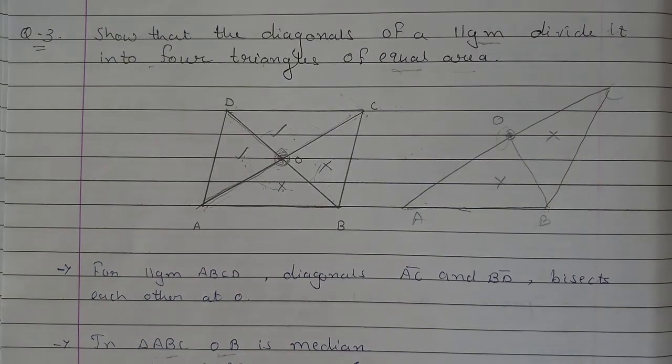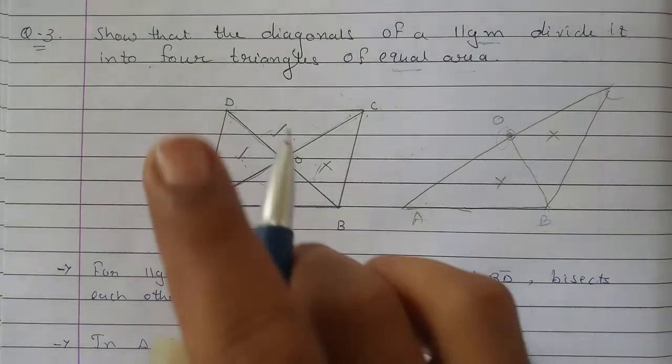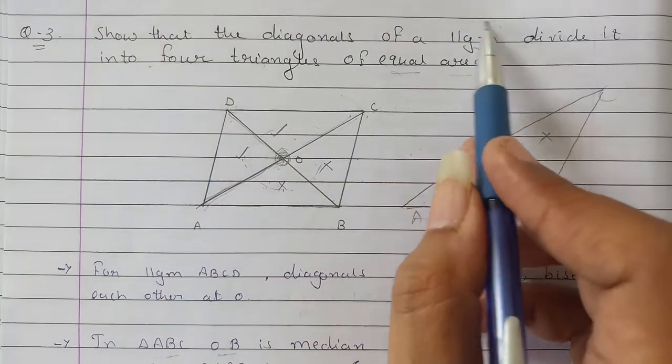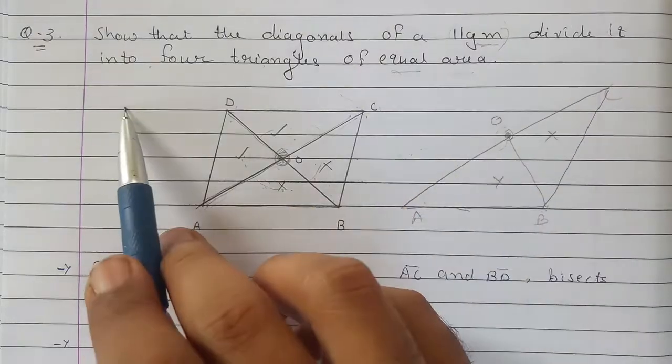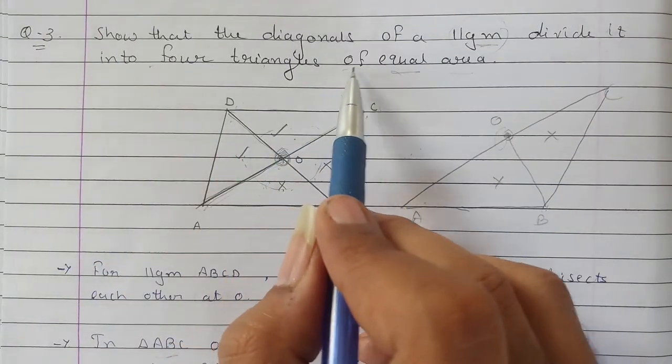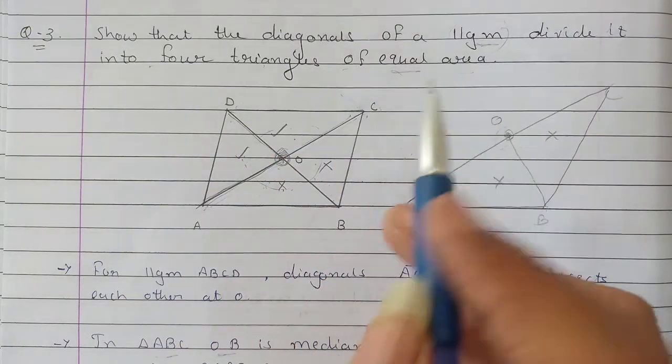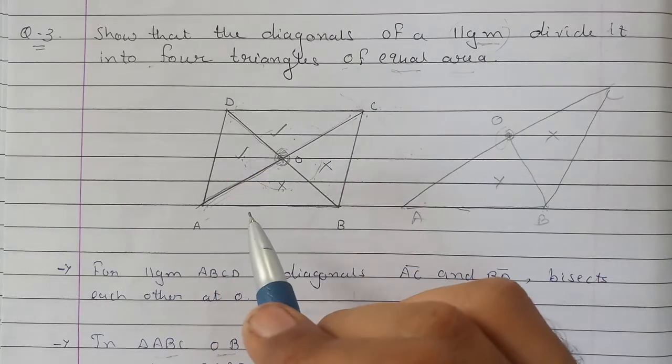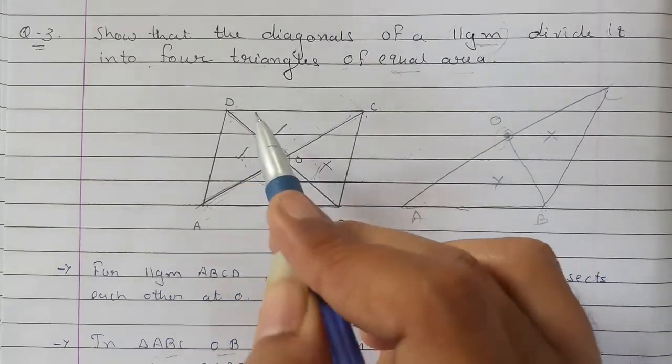Hello students, in this session we will continue with Exercise 9.2, question number 3: Show that the diagonals of a parallelogram divide it into four triangles of equal area. We have a parallelogram ABCD with diagonals AC